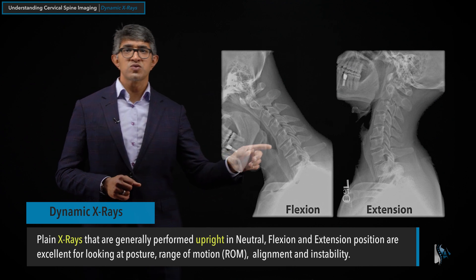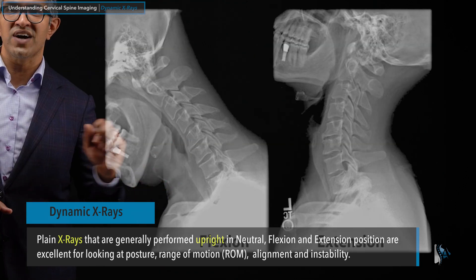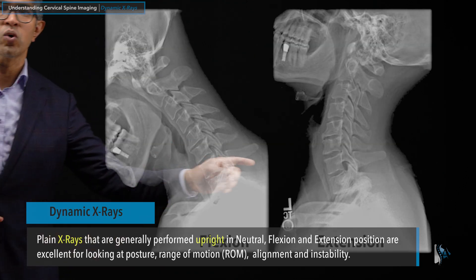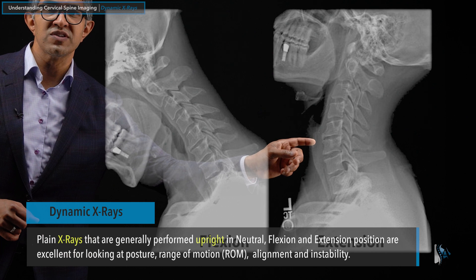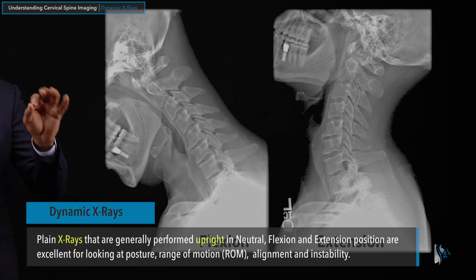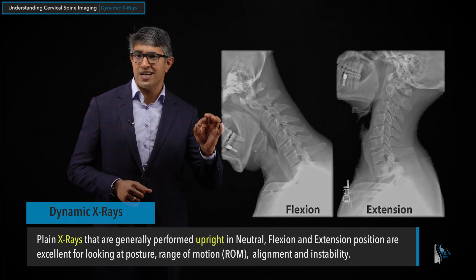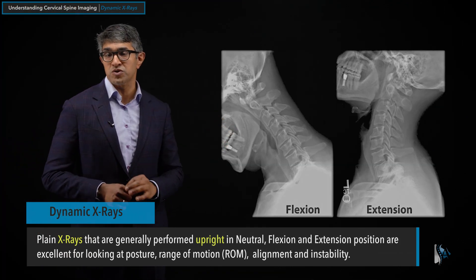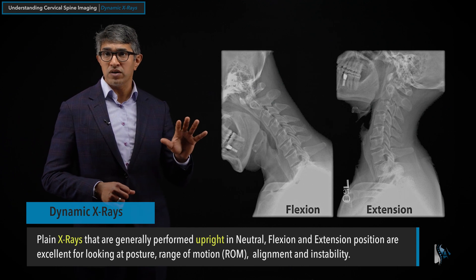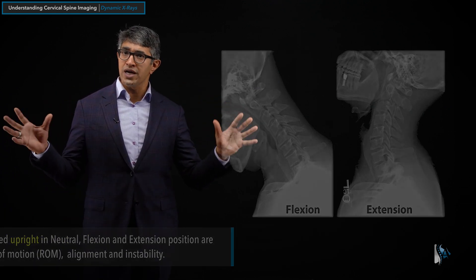You can also see a little bit what the discs themselves look like. You can see the disc at C5-C6 looking a bit more worn out. Here you can see some bone spurs there. It's a little crude — not as good as a CAT scan for looking at bone spurs — but it's very good for looking at the global alignment.